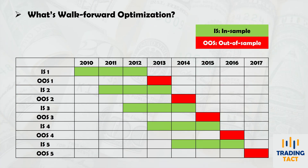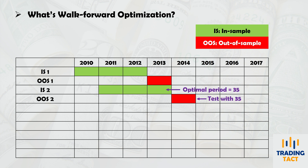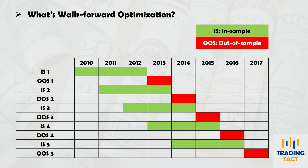Walk-forward optimization involves running repeated cycles of in-sample parameter optimization followed by out-of-sample testing. For example, a strategy can be optimized from 2010 to 2012 and run out-of-sample in 2013. After repeating this cycle multiple times, you can combine the out-of-sample portions to create a long out-of-sample backtest.